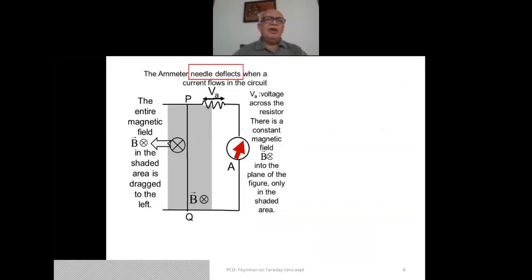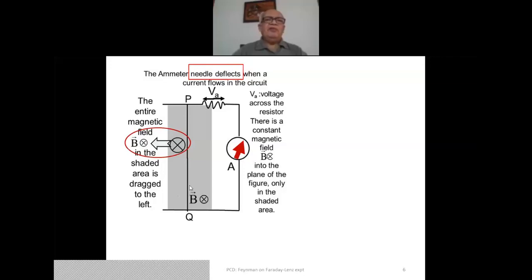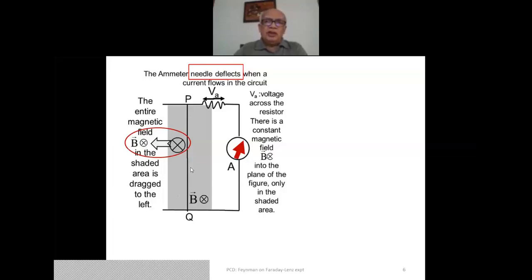In a slightly different experiment, the magnetic field is moved to the left while the circuit element PQ is left absolutely untouched. Even in this case, a current kicks off in the circuit, noticed by the deflection of the needle in the ammeter. Now we ask: what is the cause of this current? The test charge Q on the circuit element is no longer moving because PQ is completely at rest, so the Lorentz force V cross B cannot be invoked.